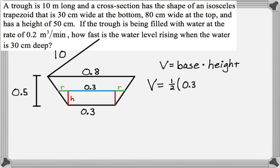So it's 1 half, 0.3 is the bottom base. The top base is going to be 0.3 plus 2R. And then the height of the trapezoid. So that's 1 half base 1 plus base 2 times the height. So all of that is actually just the area of the base.